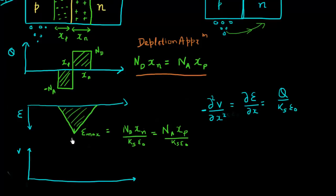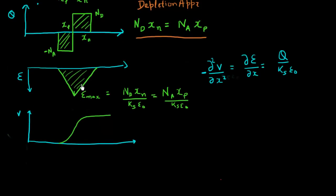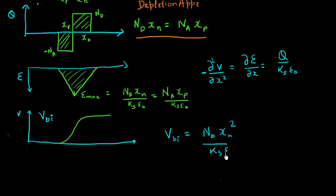Now I can integrate this triangle further. The triangle represents a linear relationship, and when I integrate it I get a square relationship in terms of distance. So when I integrate this electric field, I get the total potential drop across my PN junction, which I can denote as V_BI — the built-in voltage across my PN junction. This V_BI is given by a relationship that is squared in terms of the depletion width, with a factor of two coming from the integration. This gives me V_BI in terms of the doping concentration and the depletion width.